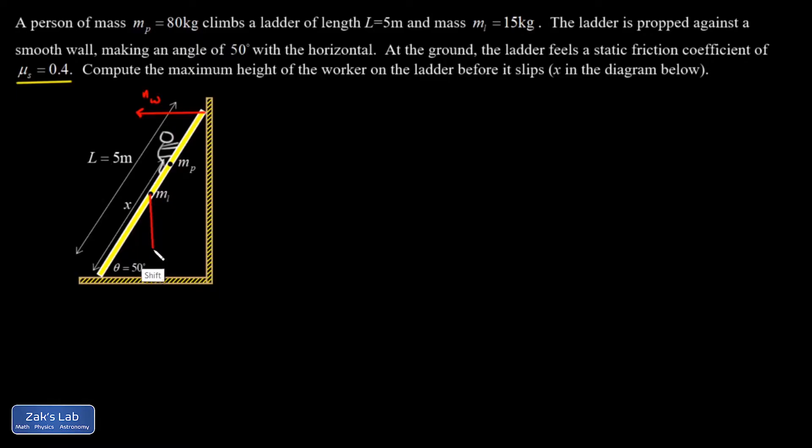And then I have gravity pulling down on the center of mass of the ladder with a magnitude of ML times G. And then gravity is pulling down at the center of mass of the person. So I just estimated where that would be in the picture and put MP times G. And then at the contact point with the ground, I have the normal force exerted straight up. So I'll call that NF for the floor.